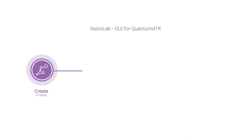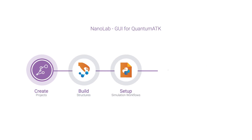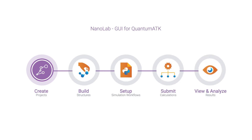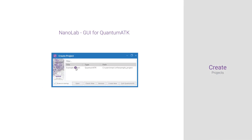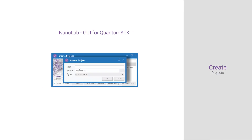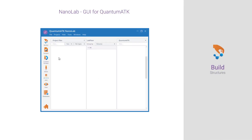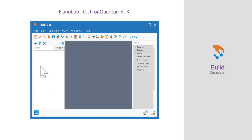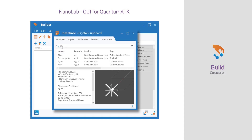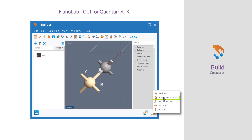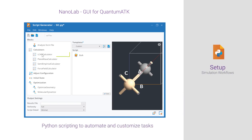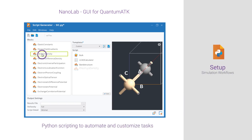Use the NanoLab graphical user interface for the whole simulation workflow. Start with creating project files. Build structures of complex materials, interfaces and devices using our advanced building tools or import them from databases. Then quickly set up basic and advanced simulation workflows to calculate a variety of material properties.